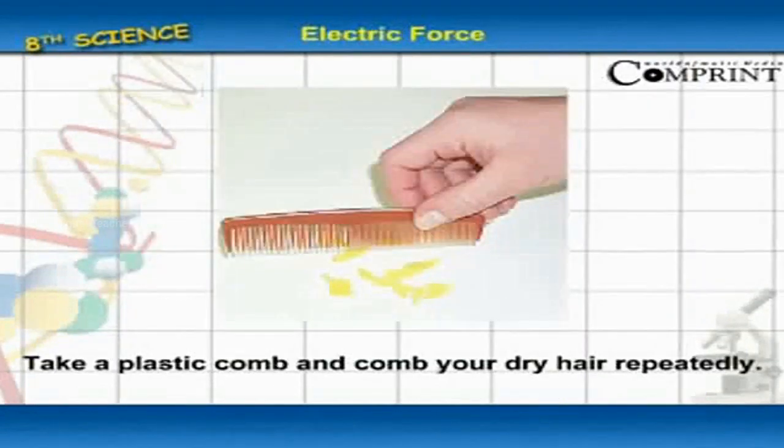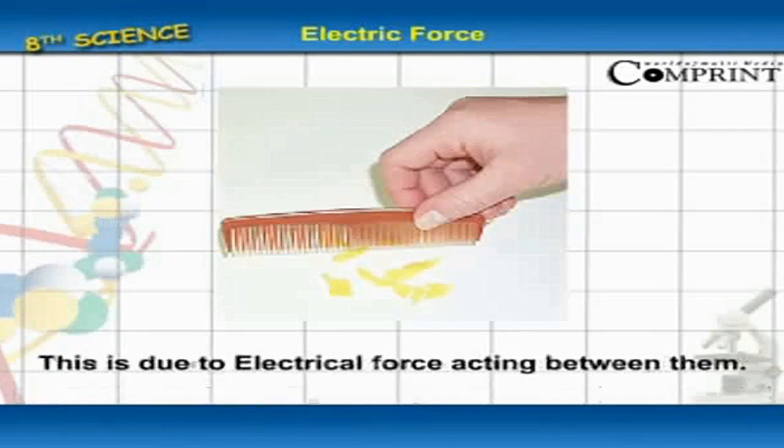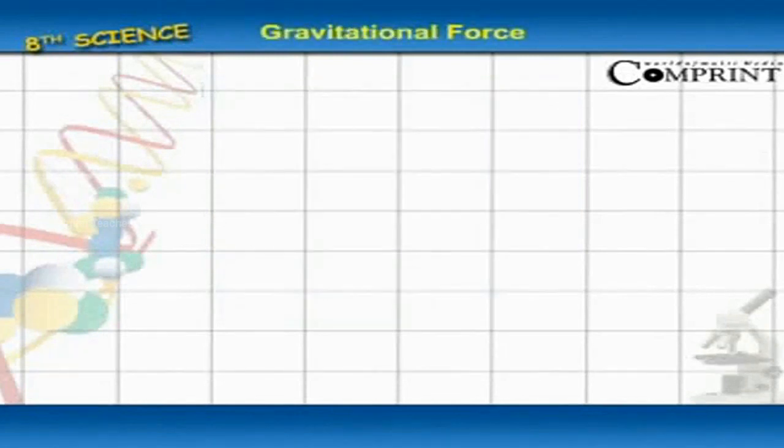Take a plastic comb and comb your hair repeatedly. Place the comb near a small cork piece or a piece of paper without touching it. They move towards the comb. This is due to electrical force acting between them.